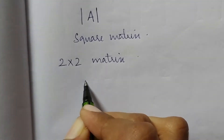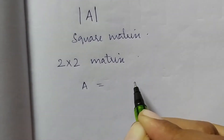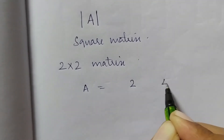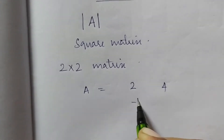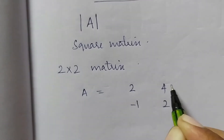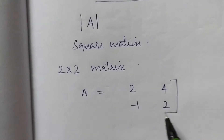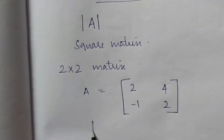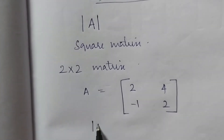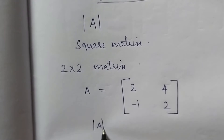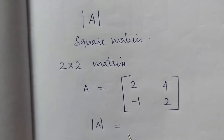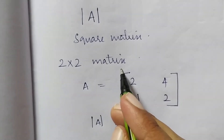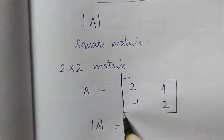Let's take an example matrix: 2, 4, minus 1, 2. This is our matrix, and now we write the determinant of this matrix.